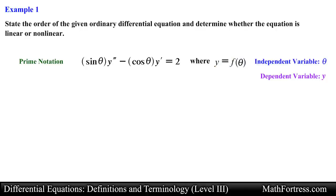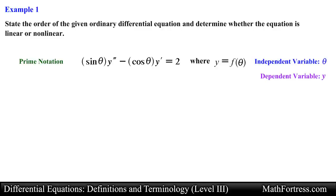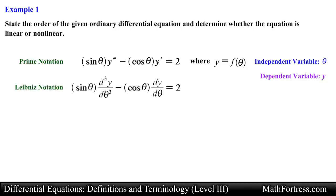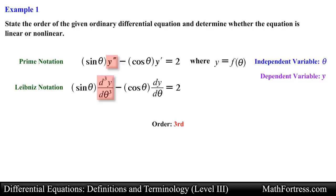Remember that the first step in classifying a differential equation is to identify the dependent and independent variable. This means the dependent variable is y and the independent variable is theta. We can also rewrite this ODE using Leibniz notation. This ODE contains two derivatives — a third derivative and a first derivative — and the highest of these is the third derivative, so we classify this ODE as third order.